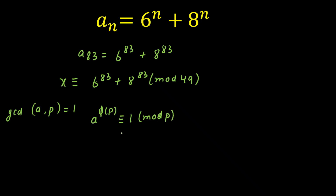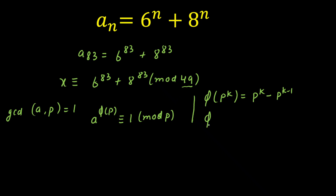Since A and P are coprime, we can apply the theorem directly. Recall that for a prime P, the Euler-Totient function φ(P^K) equals P^K minus P^(K−1). Here our modulus is 49, which is 7 squared. We can verify that GCD(49, 6) = 1 and GCD(8, 49) = 1, so we can apply the Euler-Totient theorem. Let me calculate φ(7²) = 7² − 7¹ = 49 − 7 = 42.